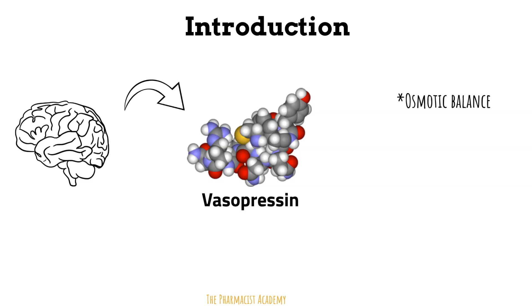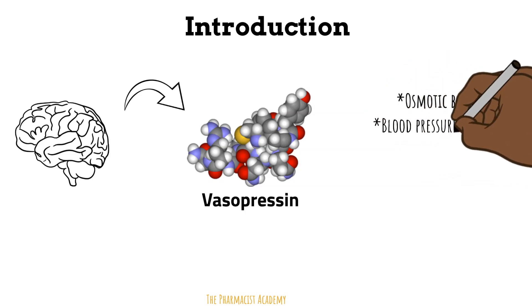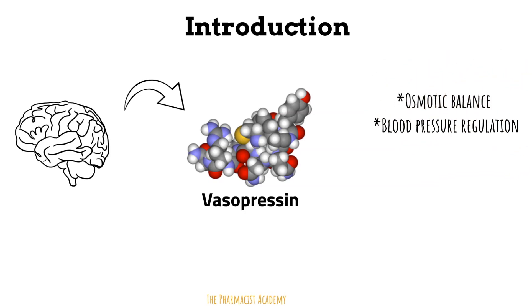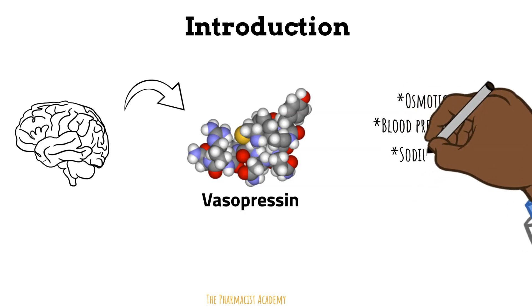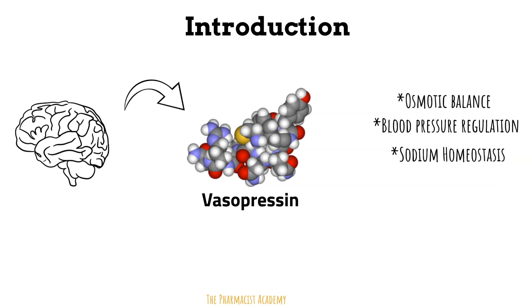Pretty much whenever the concentration of your blood is high, your hypothalamus is going to release antidiuretic hormone to retain more water and reduce that concentration. Blood pressure regulation: if your blood pressure is high, you probably don't want vasopressin floating around because it's going to retain more volume, which can increase blood volume and increase your blood pressure subsequently. Sodium homeostasis: if your urine is highly concentrated with sodium, your body is going to reduce the amount of vasopressin it releases so that you can get rid of more water and your urine will become less concentrated.